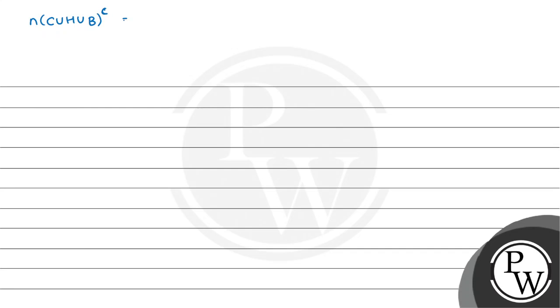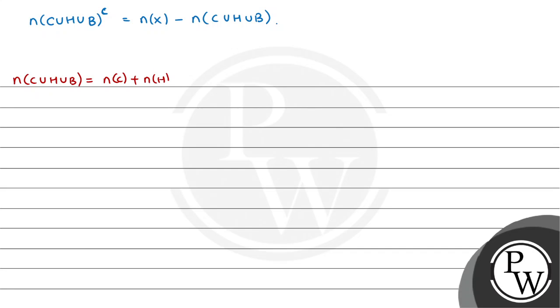We need to find the number of students who did not play any game, which is the complement of C union H union B. The formula for n(C∪H∪B) is: n(C) + n(H) + n(B) minus n(C∩H) minus n(H∩B) minus n(C∩B) plus n(C∩H∩B).